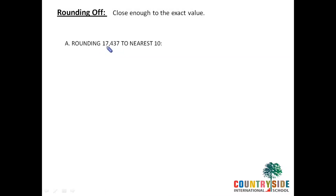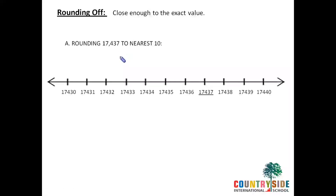Now let's see the meaning through a number. The number is 17,437. We have to round it to the nearest 10. As the rounding off is to the nearest 10, in the 1s place it is 7 and in the 10s place it is 3. I'll draw a number line which will start from 17,430 — since it is to the nearest 10s — going from 17,430 to 17,440. The number line is divided into 10 equal parts and each section represents 1 unit.